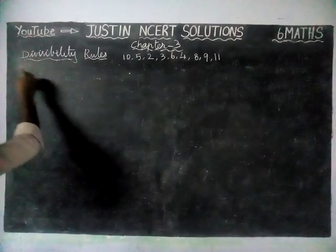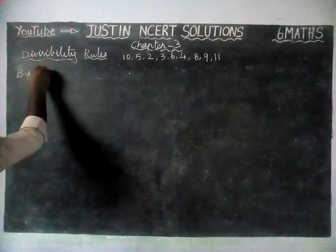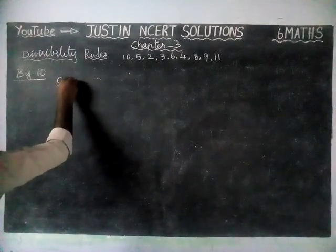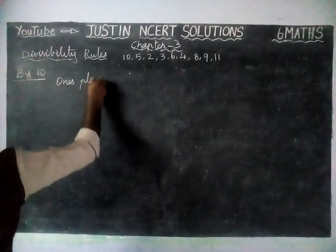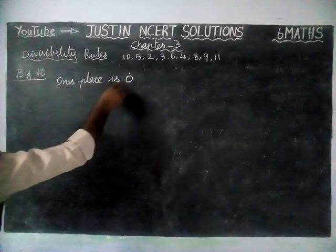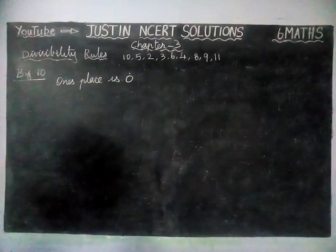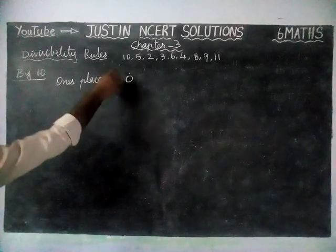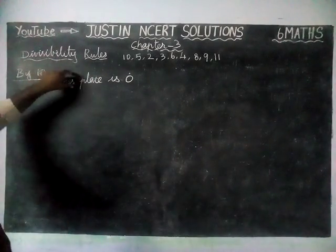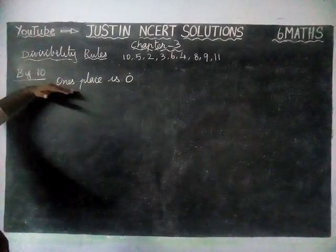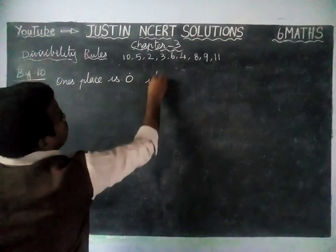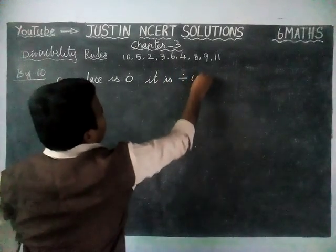First, we are going to check for divisibility by 10. If the 1's place of a number is 0, then that number is divisible by 10. For all the sums, we will write only the hint — 1's place is 0, then it is divisible by 10.